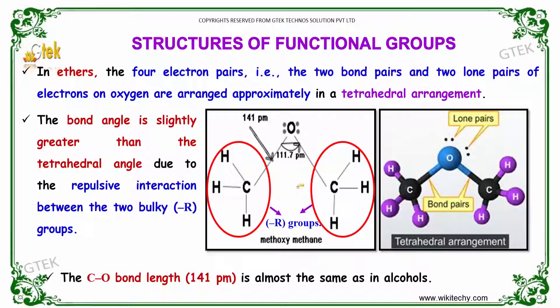The CO bond length is almost the same as in alcohols. In this tetrahedral arrangement, we can see that the two bond pairs and the two lone pairs of electrons on oxygen are arranged approximately tetrahedrally.